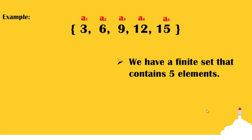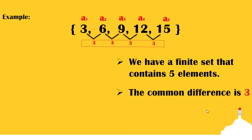Now, let us try to look at the difference between two consecutive terms in the set. As you can observe, all of them have a difference of 3. This 3 is what we call the common difference.